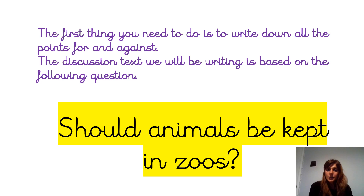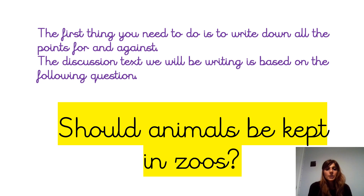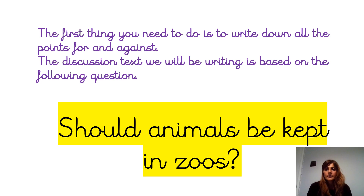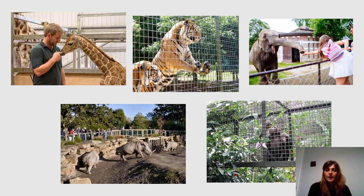The first thing you need to do is to write down all the points for and against. The discussion text we will be writing about is based on the following question: Should animals be kept in zoos?